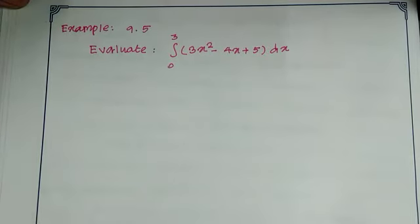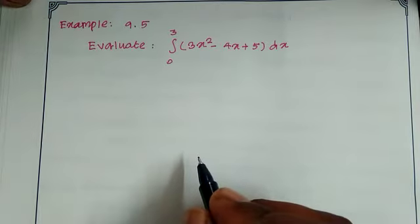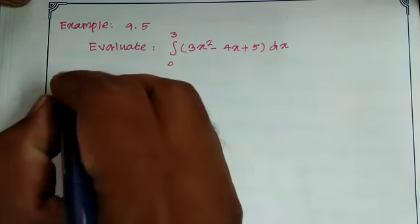Hi students, now I am going to talk about chapter 9, example 9.5. Evaluate the integral from 0 to 3 of 3x square minus 4x plus 5 dx.